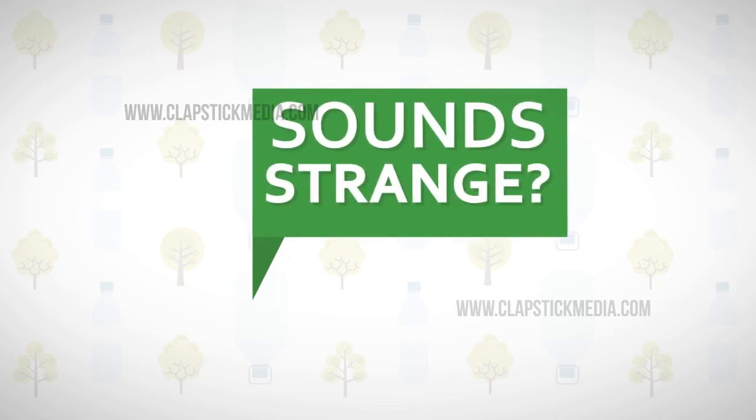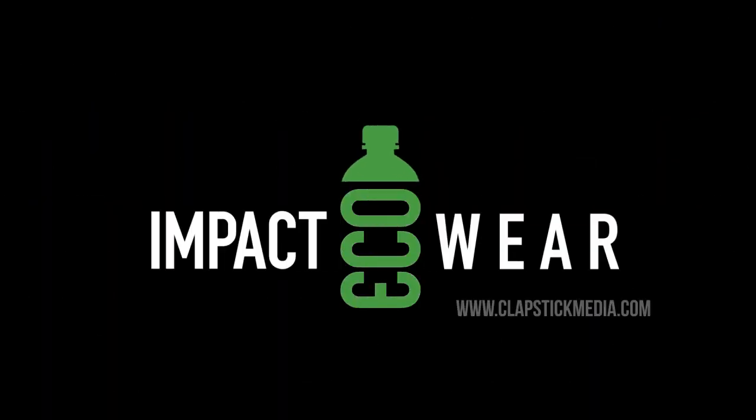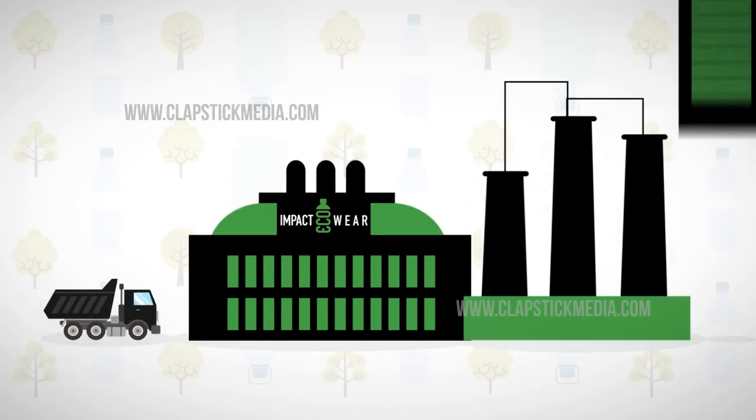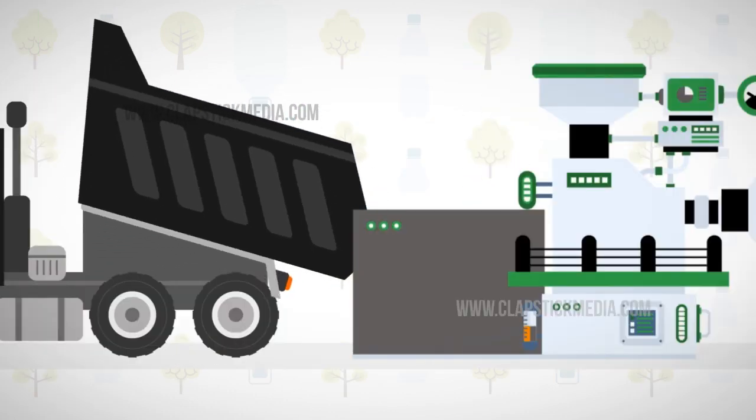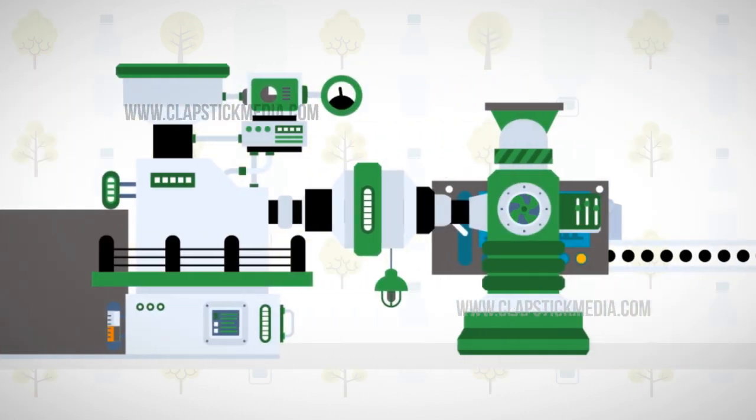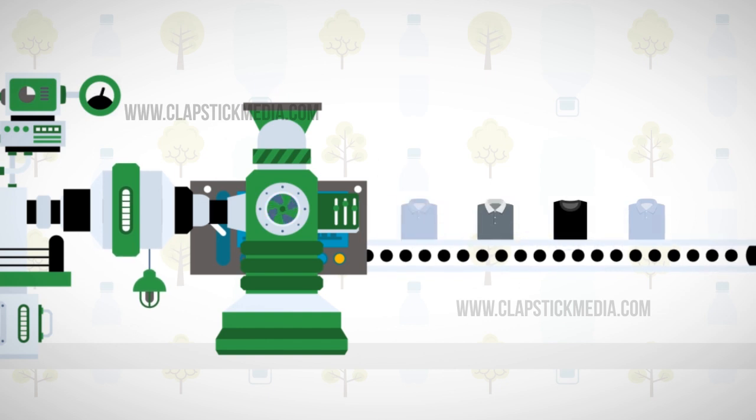Sounds strange? That is exactly what Impact EcoWear does. At Impact EcoWear, we take in plastic bottle waste and convert them to high-grade usable fabrics and materials for apparel and accessories.